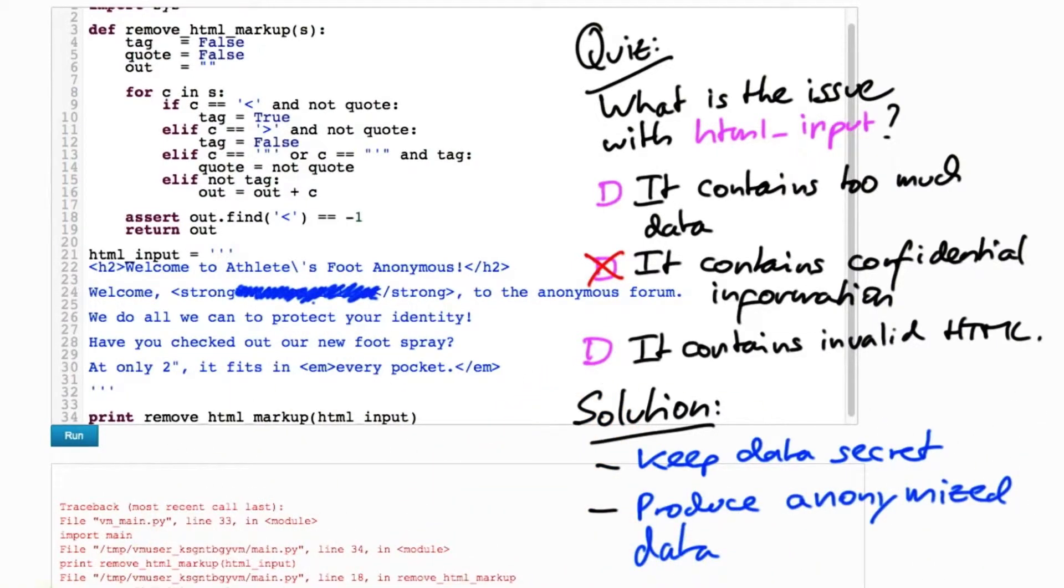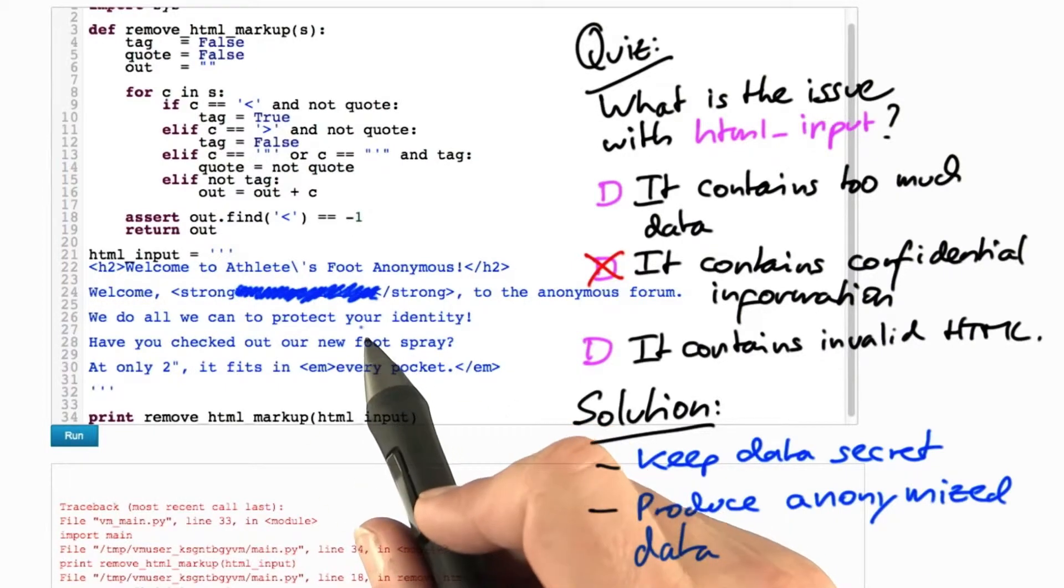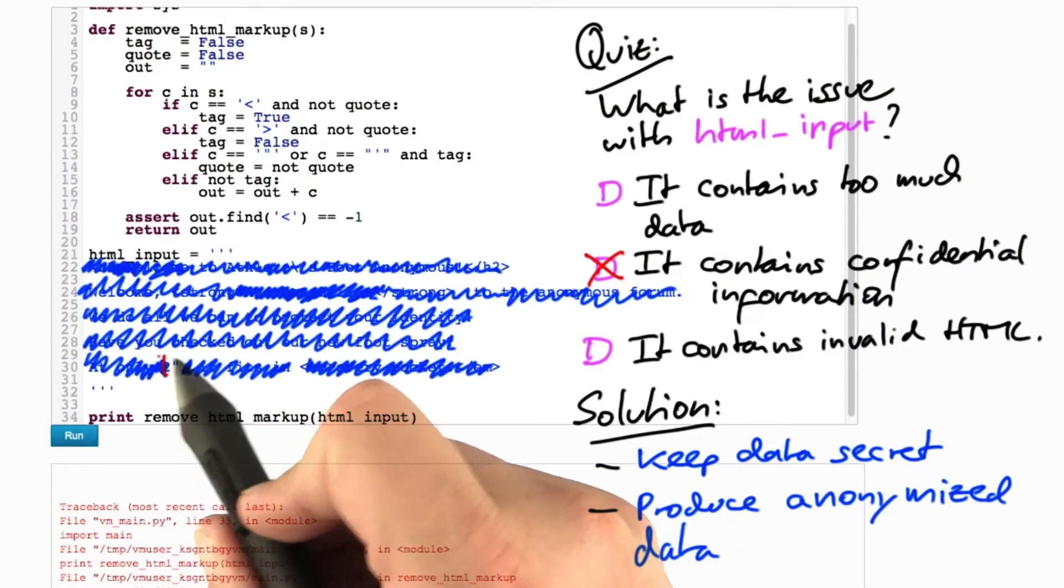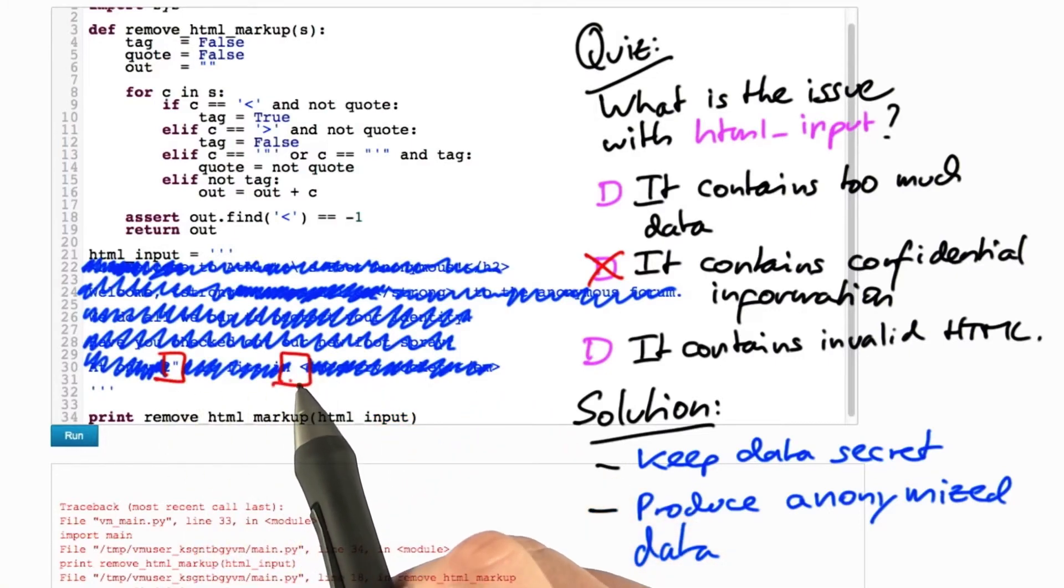The second option is simply to anonymize the data, that is, you produce a version of the data with sensitive information removed. You can also use a technique like delta debugging to simplify the input automatically and to keep only those characters that actually are required to reproduce the failure.